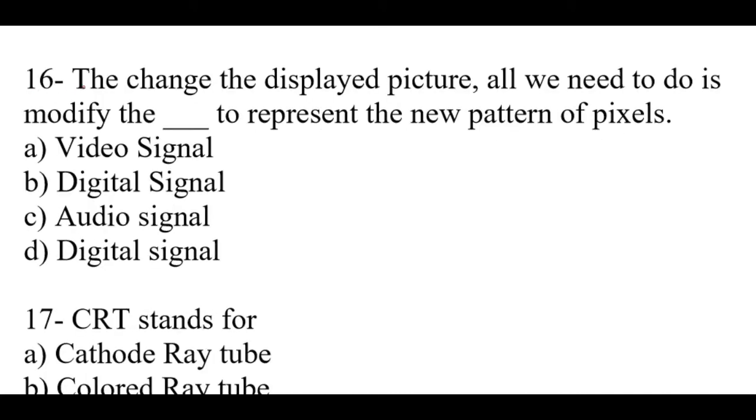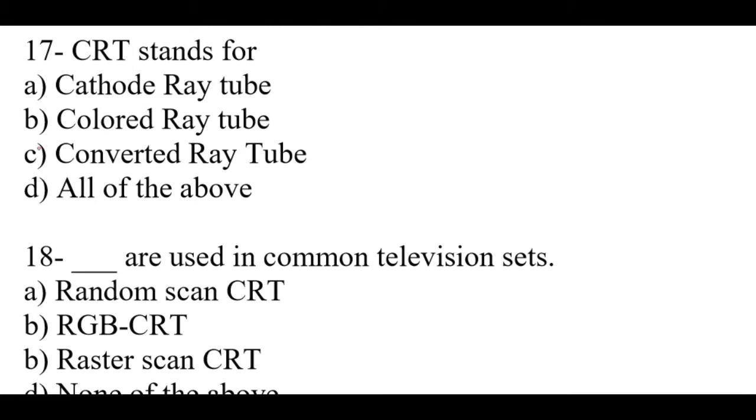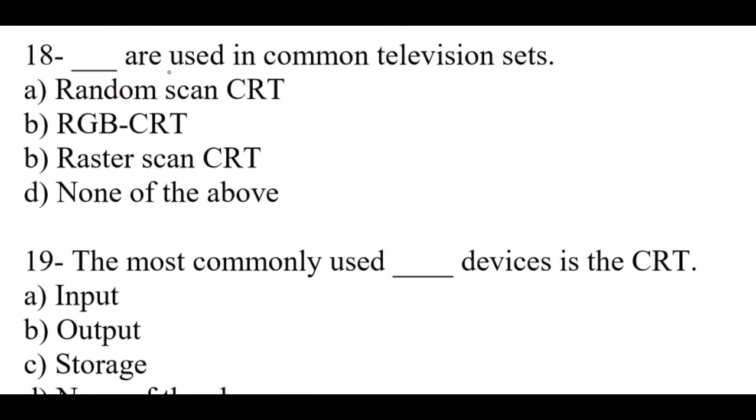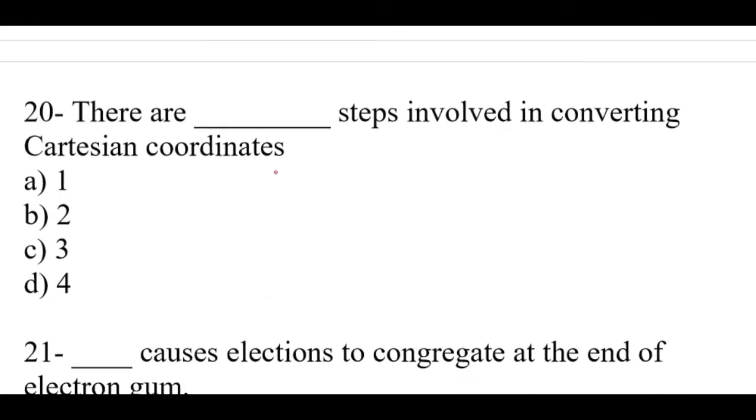Question number 16: To change the display picture all we need to do is modify the dash to represent the new pattern of pixels. Right option is B, digital signal. Question number 17: CRT stands for dash. Right option is A, cathode ray tube. Question number 18: Dash are used in common television sets. Right option is C, raster scan CRT. Question number 19: The most commonly used dash devices is the CRT. Right option is B, output. Question number 20: There are dash steps involved in converting casting coordination coordinates. Right option is D, four.